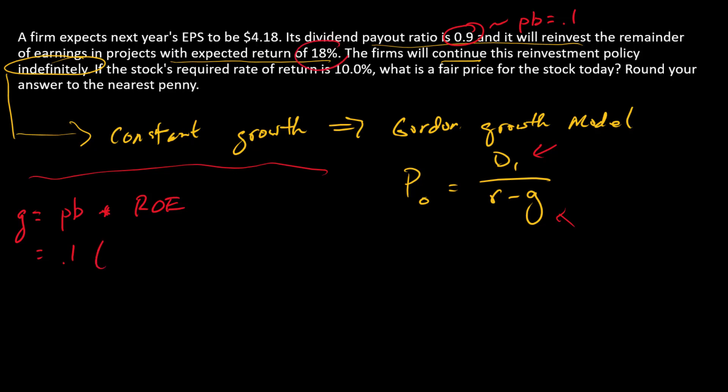And we're going to multiply that by the ROE, or the expected return on new projects. So that's going to be 0.18. And so growth is what? It's 0.018. So there's our constant growth rate that's going to go in right here.